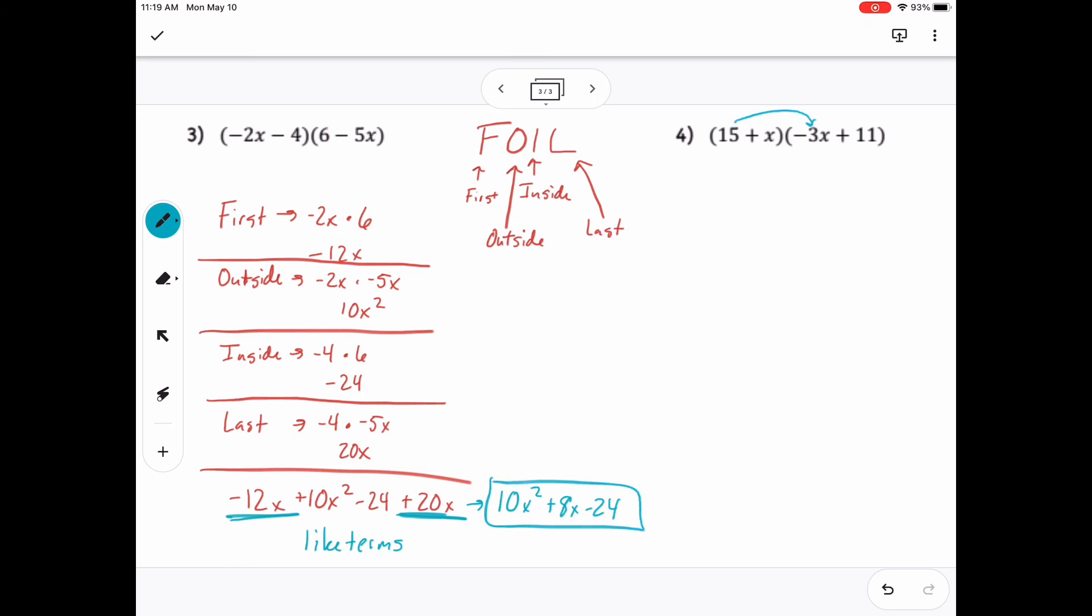Now I don't have to write out this whole line. I can just use arrows to notate what I'm multiplying. So 15 times negative 3x, negative 45x. 15 times 11 are my outside terms. X and negative 3x are my inside terms, get multiplied. And then x times 11 get multiplied, because they're my last terms. I see that negative 45x and 11x are like terms, so I put them together. Gets me negative 34x. And then that's my quadratic expression.